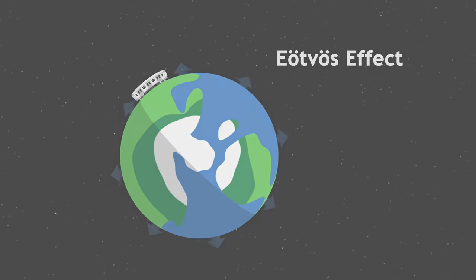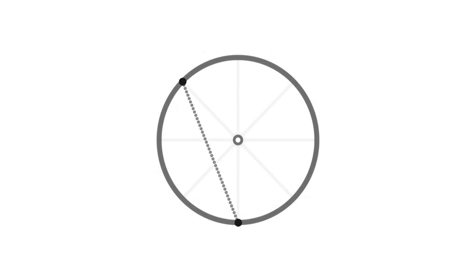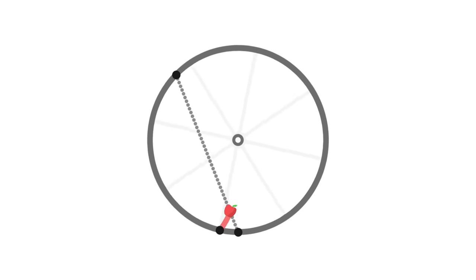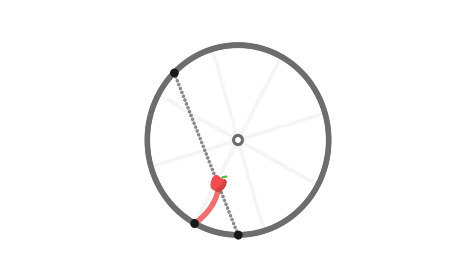To conclude, the Coriolis force is not a real force. It is an inertial effect that appears when we measure a trajectory from a spinning point of view. When an object moves in a rotating frame of reference, it seems to undergo a force which gradually curves its motion.